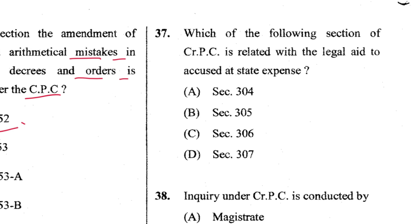Question 37: Which section of CrPC is related to legal aid to the accused at state expenses? That is Section 304. A is the answer.